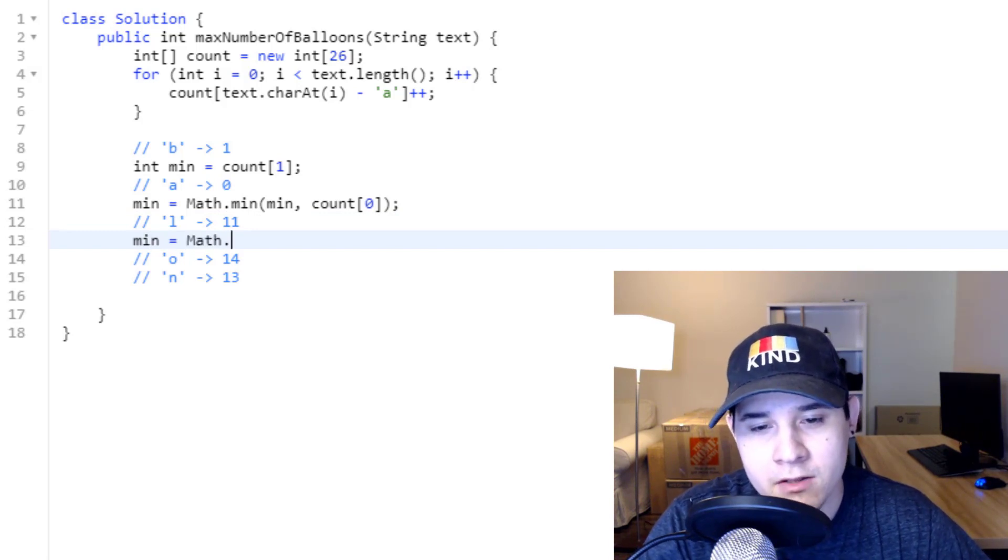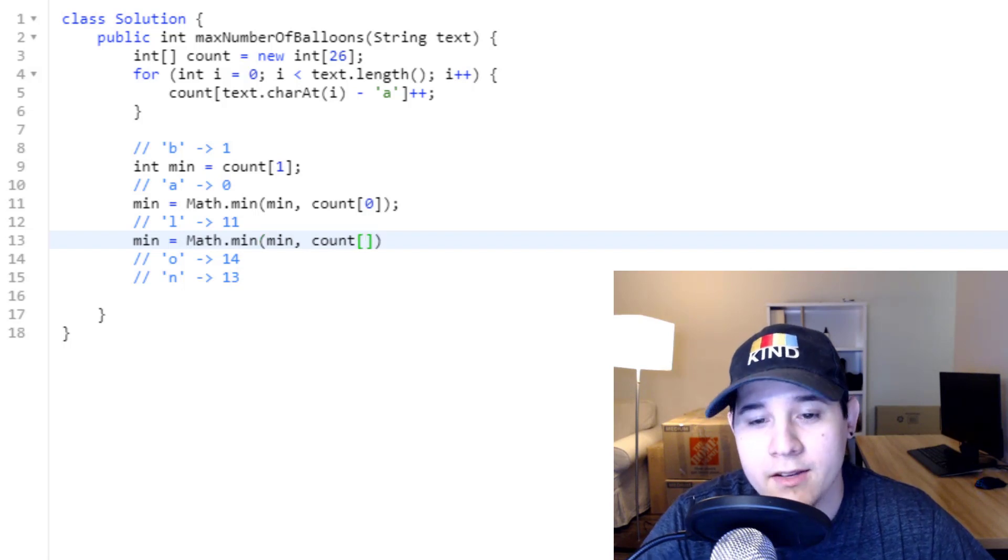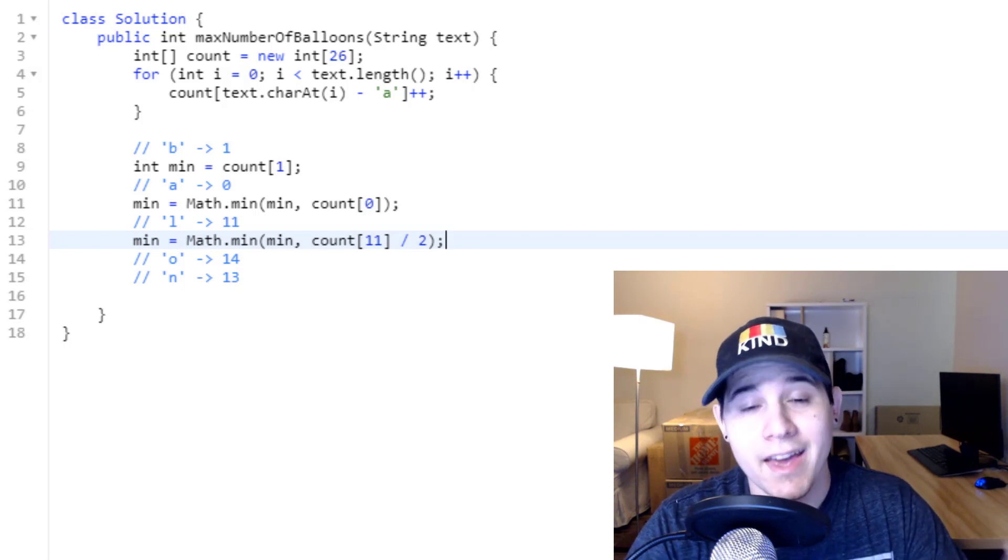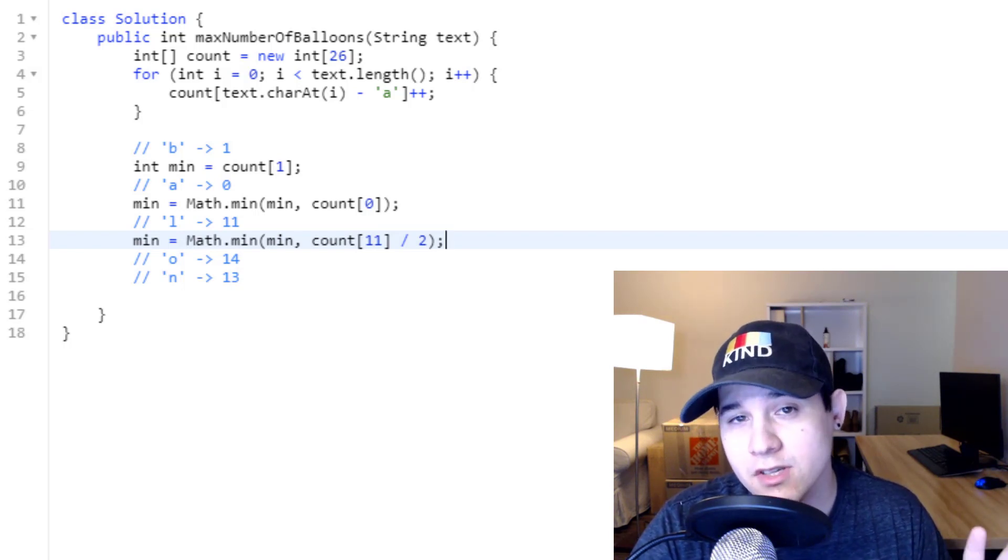Character l, math dot min, min, count at index 11, divided by two. The reason why we do divided by two is because l has two occurrences in the word balloon.